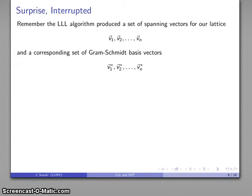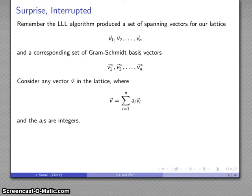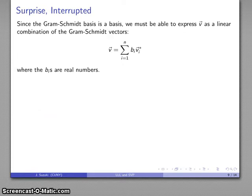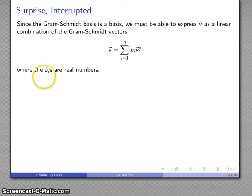And this leads to a rather surprising result. Let's take our lattice basis and Gram-Schmidt basis vectors and consider any vector v in the lattice. This vector v is some linear combination of the basis vectors for the lattice where the coefficients are all integers. Because the Gram-Schmidt basis is a basis, I must also be able to express v as some linear combination of the Gram-Schmidt basis vectors where the coefficients are real numbers.